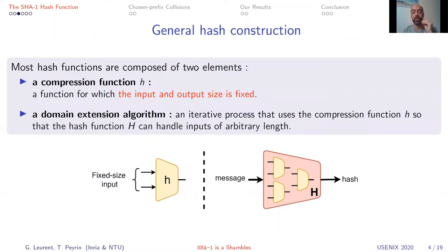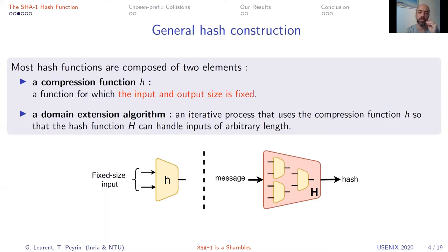When you look at how hash functions are built in practice, most of them follow a construction based on two different objects. The first is a compression function, denoted in yellow here as small h. A compression function is like a hash function, except it takes a fixed size input rather than an arbitrary long one. We want the same properties — hard to invert and collision resistant. The second is the domain extension algorithm, shown in red, which defines how the compression function is used to output the final hash value.